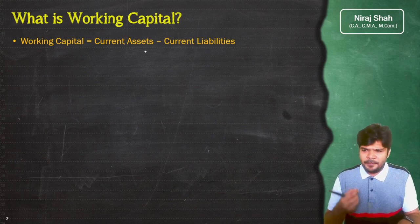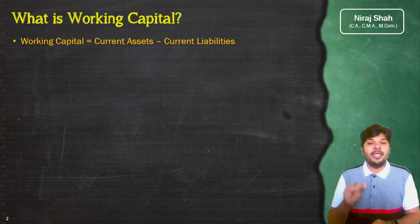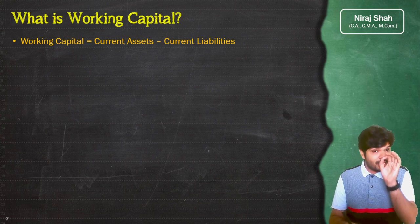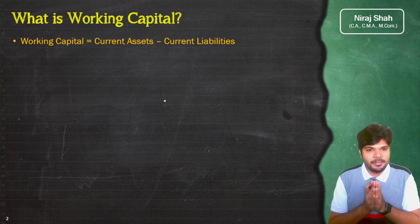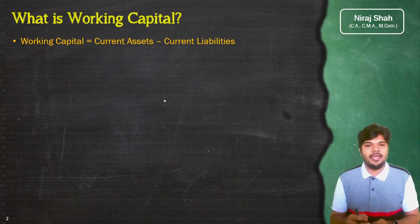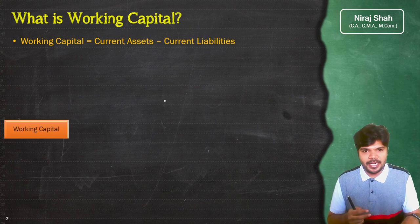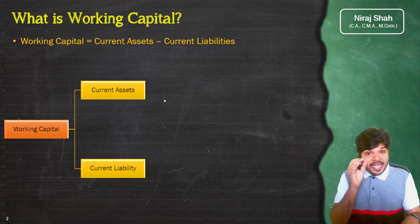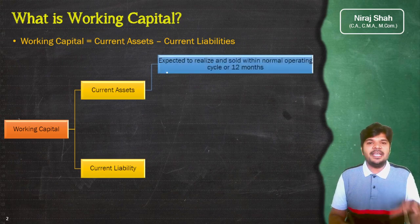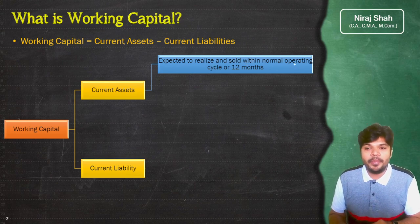अब पहले हम थोड़ा यह भी समझ लें, एक बार revise कर लें कि हम current assets किसको कहते हैं और current liabilities किसको कहते हैं। वैसे accounts में आपने current assets और current liability के बारे में पढ़ा है। Working Capital की दो components हैं — एक है current asset और दूसरा है current liability। Current asset is such an asset of the business which is expected to be realized and sold within the normal operating cycle.